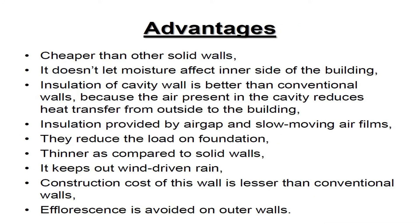Advantages. Cavity walls are cheaper than other solid walls. They don't let moisture affect the inner side of the building. Insulation of a cavity wall is better than conventional walls because the air present in the cavity reduces heat transfer from outside to the building. Insulation is provided by the air gap and slow moving air films. They reduce the load on the foundation. Cavity walls are thinner as compared to solid walls, keep out wind-driven rain, and the construction cost is lesser than conventional walls. Efflorescence is also avoided on outer walls.